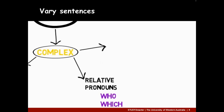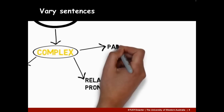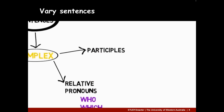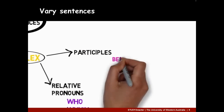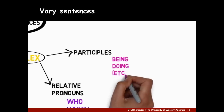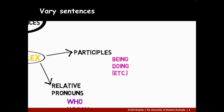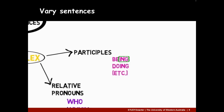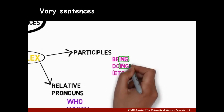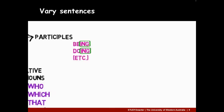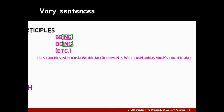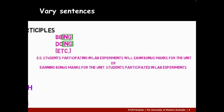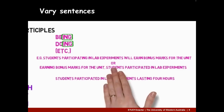And finally, we can create complex sentences using participles. Participles often end with -ing, like these words. Participle clauses can come after the subject, before the subject, or after the object.